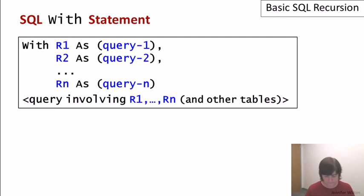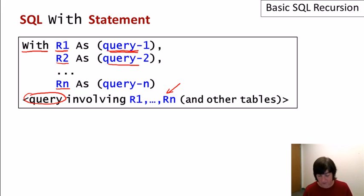Here's the with statement in SQL. We give the keyword with and then we list one or more new relation names. So these R1 through RN would be relations that don't exist in the database, and each one of those is tied to a query. So what we're effectively saying is that R1 is going to contain the results of query 1, R2 the results of query 2, and so on. Once we've set that up, then the final part of the with is a final query that can involve any tables in the database and can also involve these new tables R1 through RN. In some ways you can think of the with statement as setting up temporary views. So it sets up a view for each one of these R's, then runs a query involving the views and then the views go away.